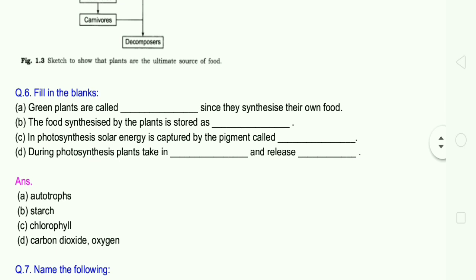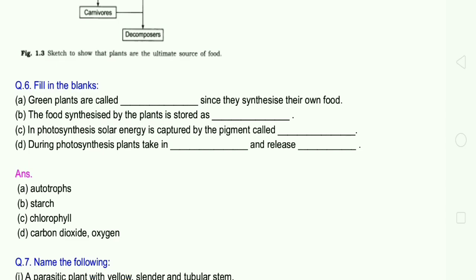C, in photosynthesis, solar energy is captured by the pigment called chlorophyll. Photosynthesis uses green color pigment chlorophyll. D, during photosynthesis, plants take in carbon dioxide and release oxygen. Plants breathe in carbon dioxide and release out oxygen.